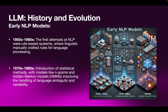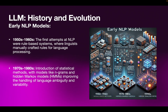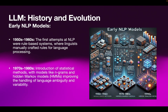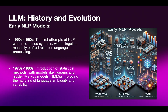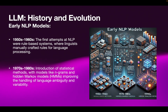Now let's look at the history and evolution. During the 1950s and 1960s, the first early NLP models were rule-based systems, where linguistic rules were manually crafted for language processing. Think of it like a simple chatbot with questions and answers stored in a spreadsheet — no AI or machine learning techniques involved, just static rule matching.